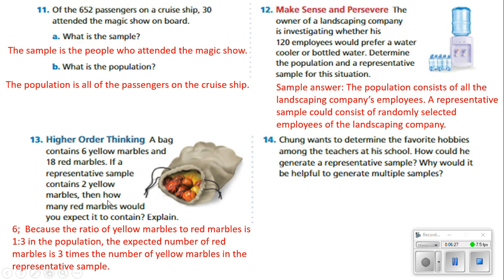There would be six red marbles. If a representative sample contains two yellow marbles, then how many red marbles would you expect it to contain? Six. Because two is one-third of six: six divided by three is two, so 18 divided by three is six. The expected number of red marbles is three times the number of yellow marbles in the representative sample.